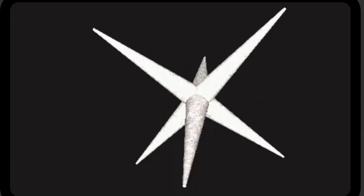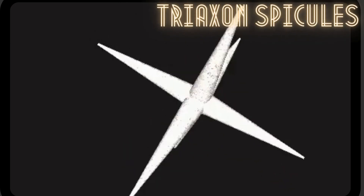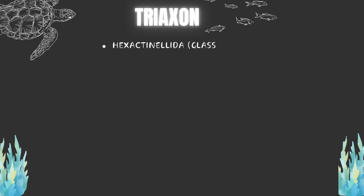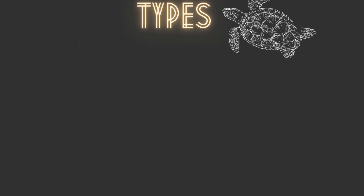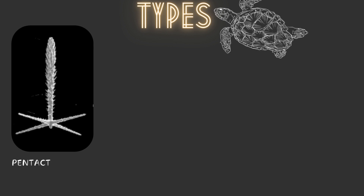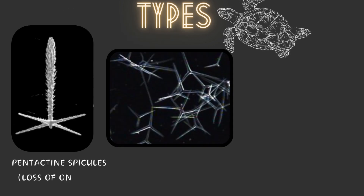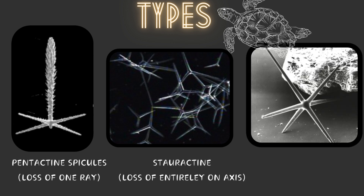Triaxon spicules are characteristic spicules of members of class Hexactinellida and are six-rayed, so are also called hexactinal spicules. A triaxon spicule is laid down along three axes crossing at right angles to each other, meeting at a center point. These may be modified to form: 1. Pentactin spicules — formed by loss of one ray. 2. Stauractin spicules — formed by loss of an entire axis. A common modification is elongation of one axis to give a sword-like appearance; when the elongated ray is covered by a spine, it is called a pinule.